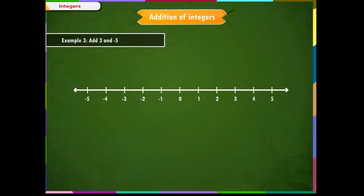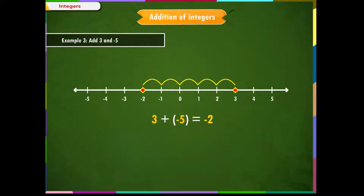Example 3: Add 3 and minus 5. We write this problem as 3 plus (minus 5). Since we are adding a negative integer, that is minus 5, as per our rule, we need to move five steps towards left. We reach at minus 2. Therefore, 3 plus (minus 5) is equal to minus 2. We can also write this as 3 plus (minus 5), which equals 3 minus 5, equal to minus 2.